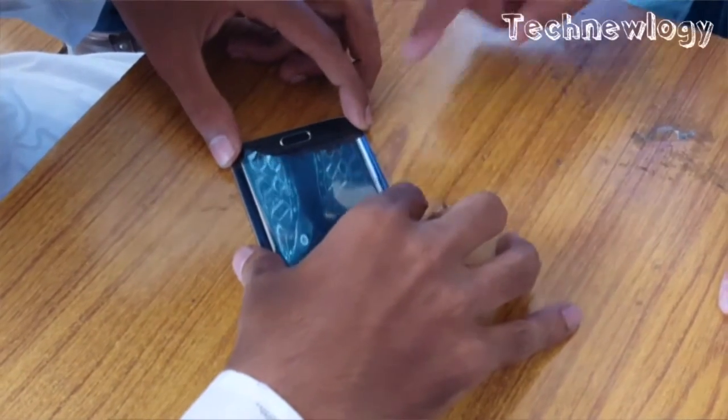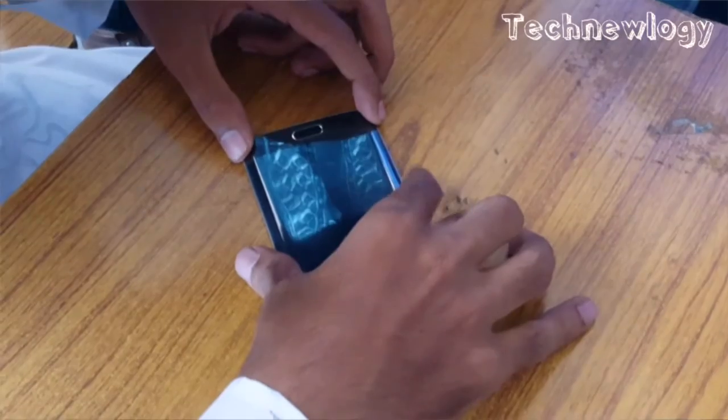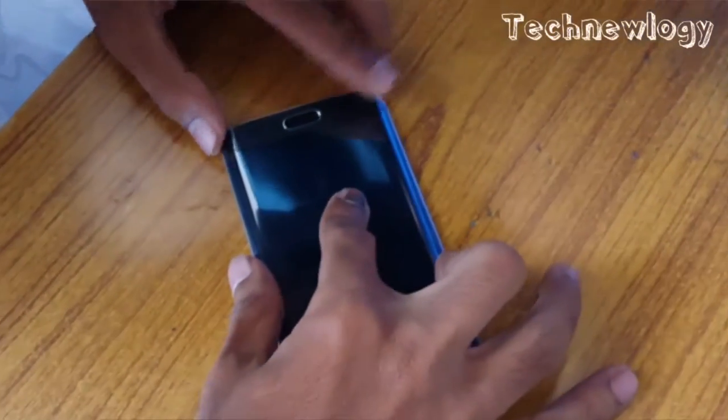All you need to do is remove existing screen protector if already applied, then clean the screen of your phone with a cloth.